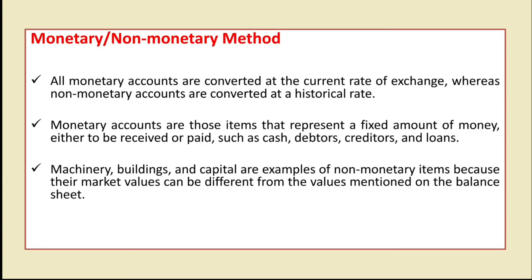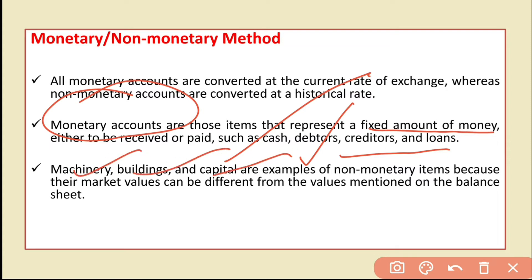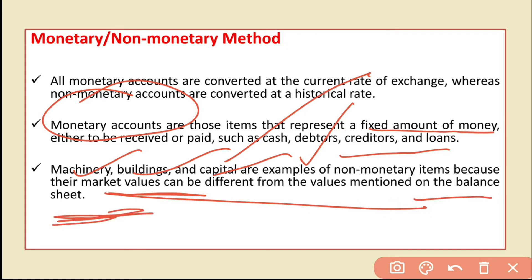In the monetary/non-monetary method, monetary assets or liabilities have a fixed amount of money that does not change — for example, cash, debtors, creditors, and loans. Non-monetary assets are those whose value fluctuates with market value, such as machinery, buildings, and capital. All monetary accounts are converted at the current rate of exchange, whereas non-monetary accounts are converted at the historical rate.